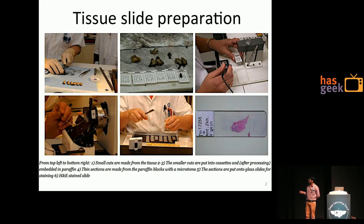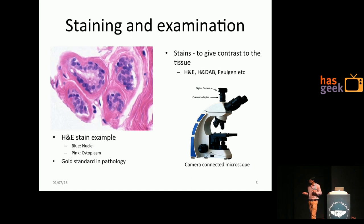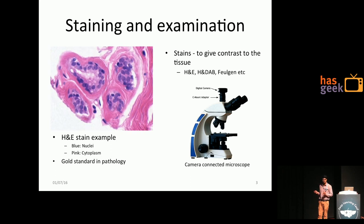The tissue sections are taken out of the body, embedded in paraffin wax, and then stained with certain chemicals. Those chemicals give them certain colors, which are very important for pathologists to identify different structures present in the tissue — for example, nuclei and their substructures. Pathologists visually inspect these. As shown in this slide, H&E (hematoxylin and eosin) staining is the gold standard in pathology. It colors nuclei blue and cytoplasms get different shades of pink or red.